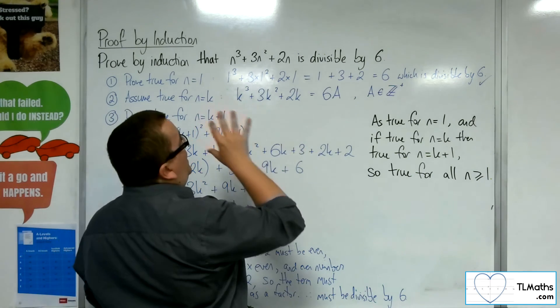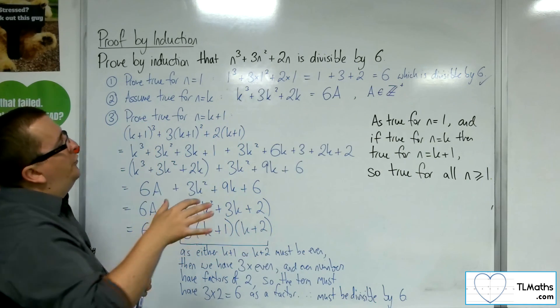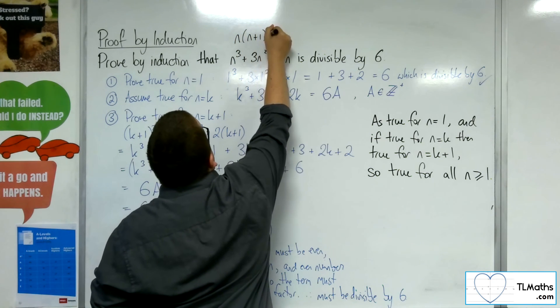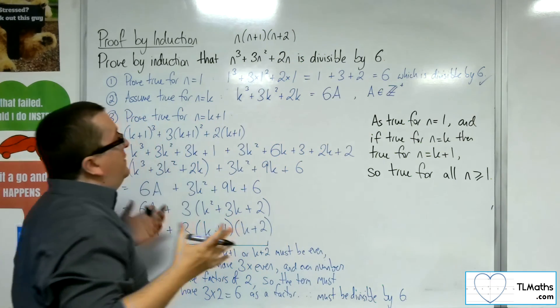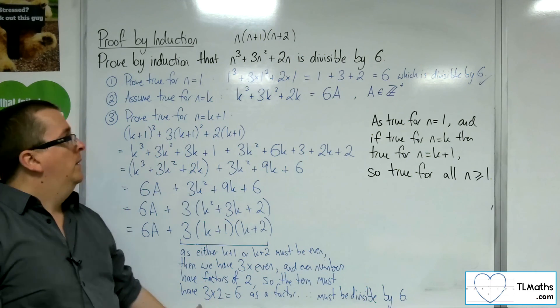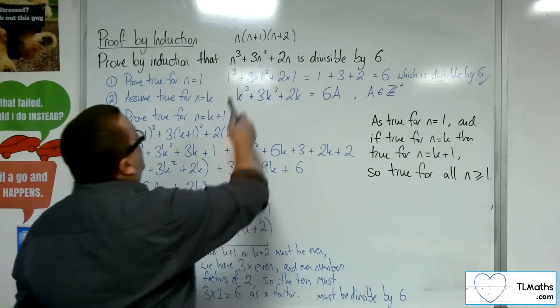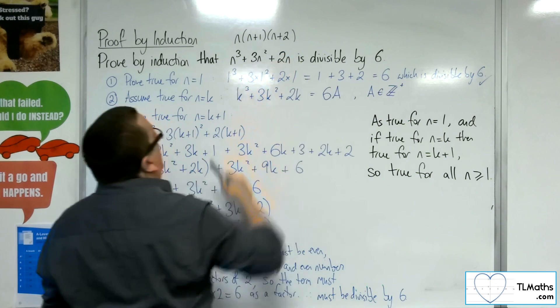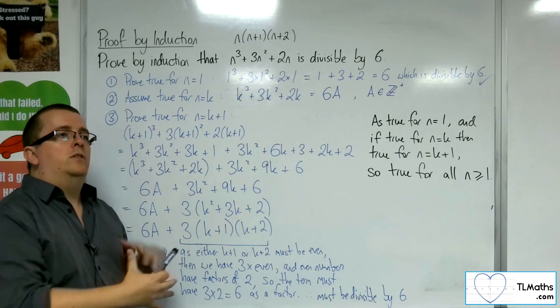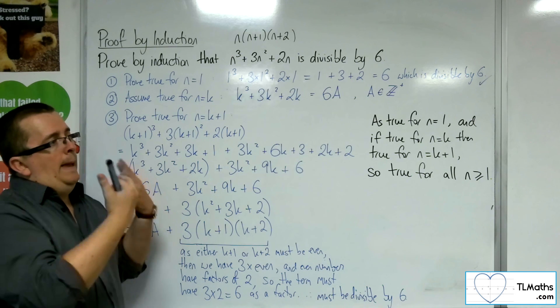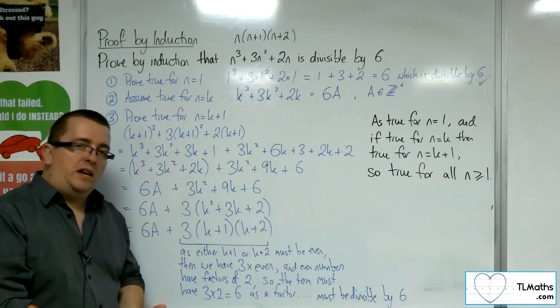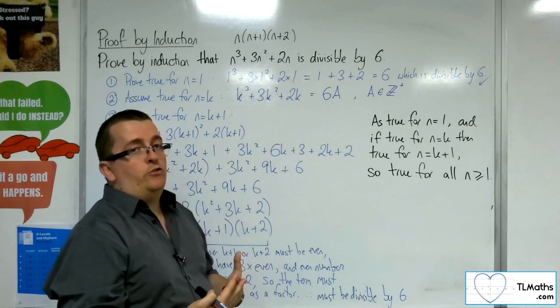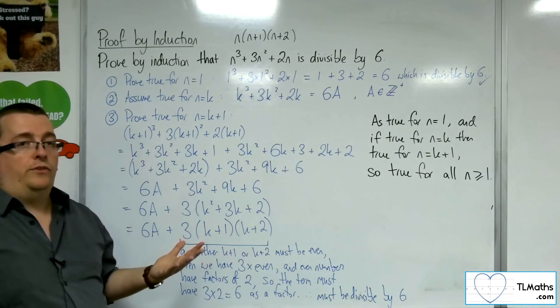So, the way that we did it there was we factorised it to make n times n plus 1 times n plus 2. And we effectively did a similar job that we did down here. So, we said that this had to be a product of 3 consecutive integers. And so, we explained that at least one of those would have to be even. One of them had to be in the 3 times table, a multiple of 3. And because we've identified that it's got a factor of 2 and a factor of 3, therefore, it's got a factor of 6.